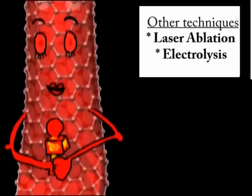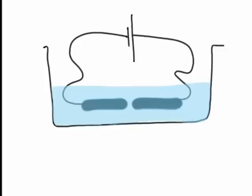Another less common technique is electrolysis. This technique is in some ways similar to the arc discharge, because it also uses two graphite electrodes. But in this case, the electrodes are immersed in molten ionic salts. With this technique, only multi-walled nanotubes are produced.